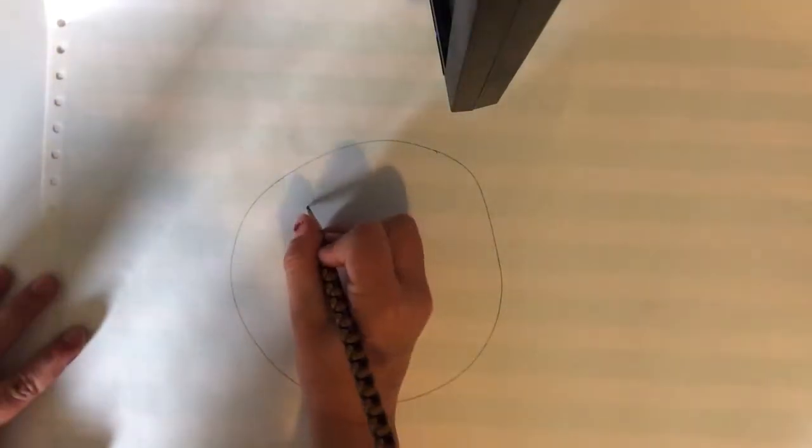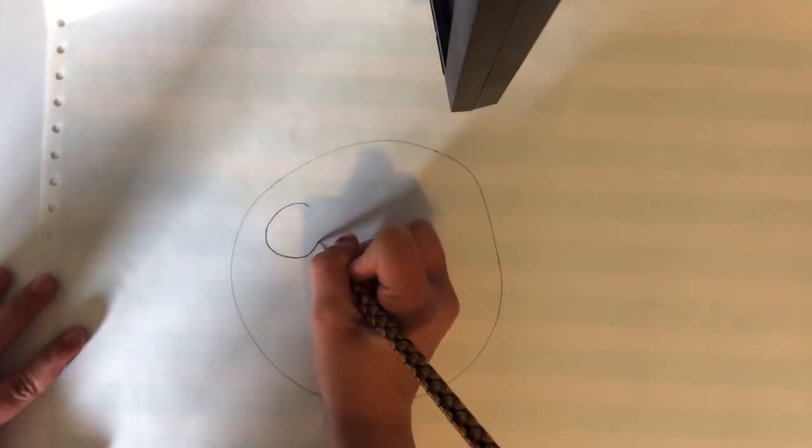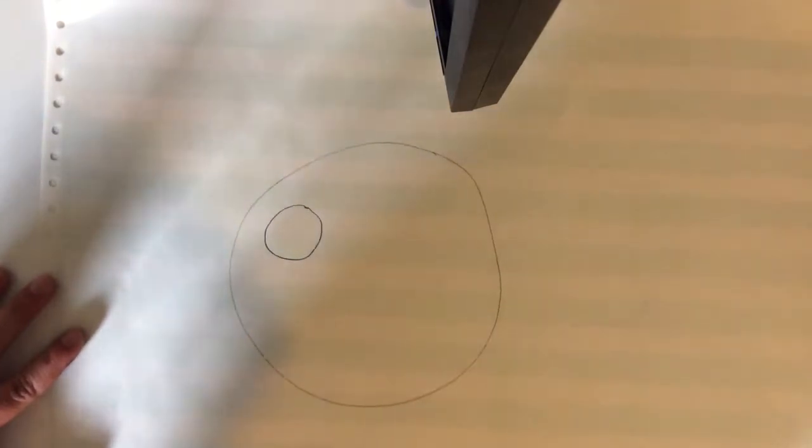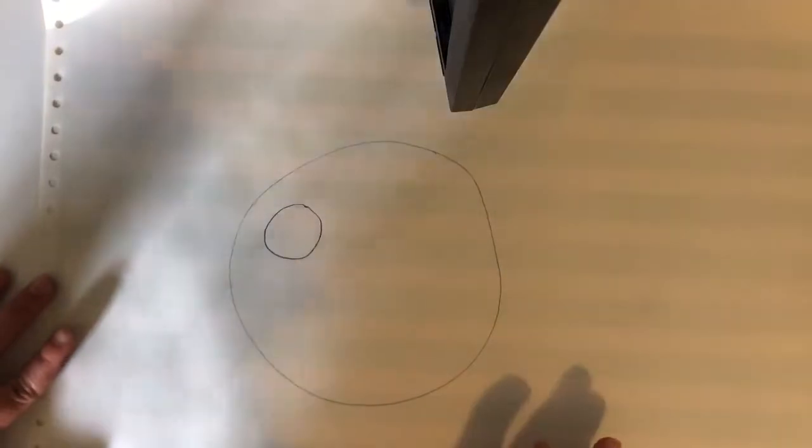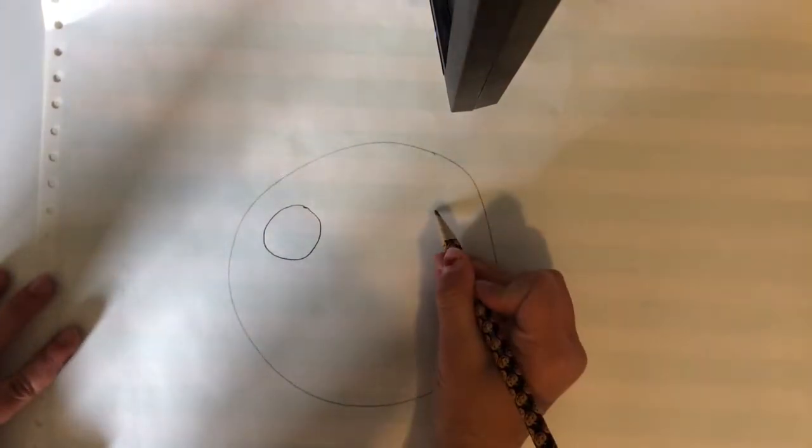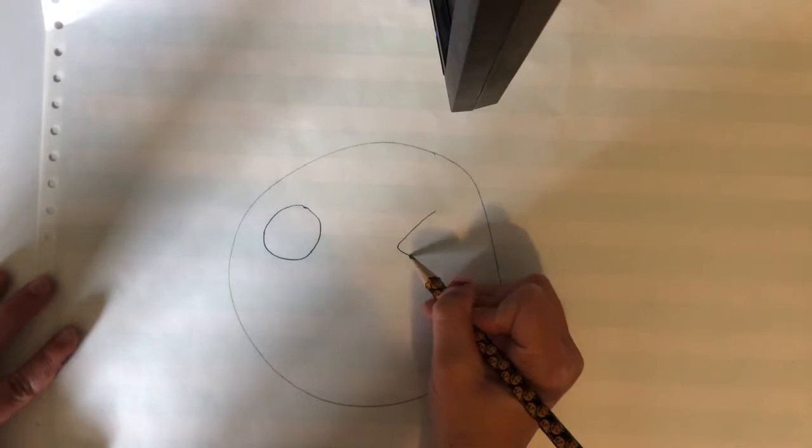Okay, so now that we did that, we're going to draw the eyeball just like that. And then we're going to draw this thing and it looks like that.